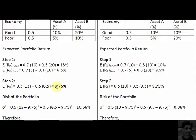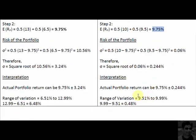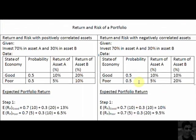The beauty is that you have been able to preserve the same level of return — 9.75% in both scenarios. But in the second scenario, where the assets were negatively correlated, the risk has fallen very close to zero, with just 0.48% of variation and a standard deviation of only 0.244%. This illustrates the return and risk of a portfolio under two scenarios: positively correlated and negatively correlated assets. Ladies and gentlemen, thank you very much. Bye-bye.